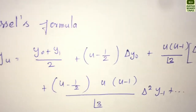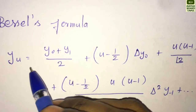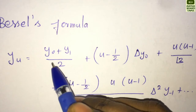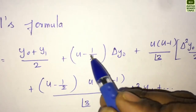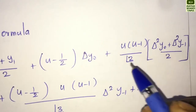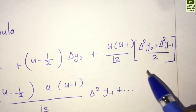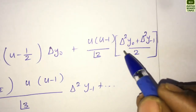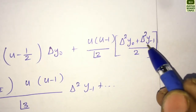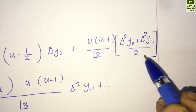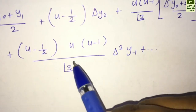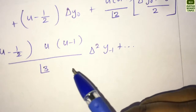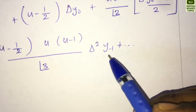Now, Bessel's formula: Y(U) = (Y0 + Y1)/2 + (U - 1/2) · ΔY0 + U(U-1)/2! · (Δ²Y0 + Δ²Y₋₁)/2 + (U - 1/2) · U(U-1)/3! · Δ³Y₋₁.